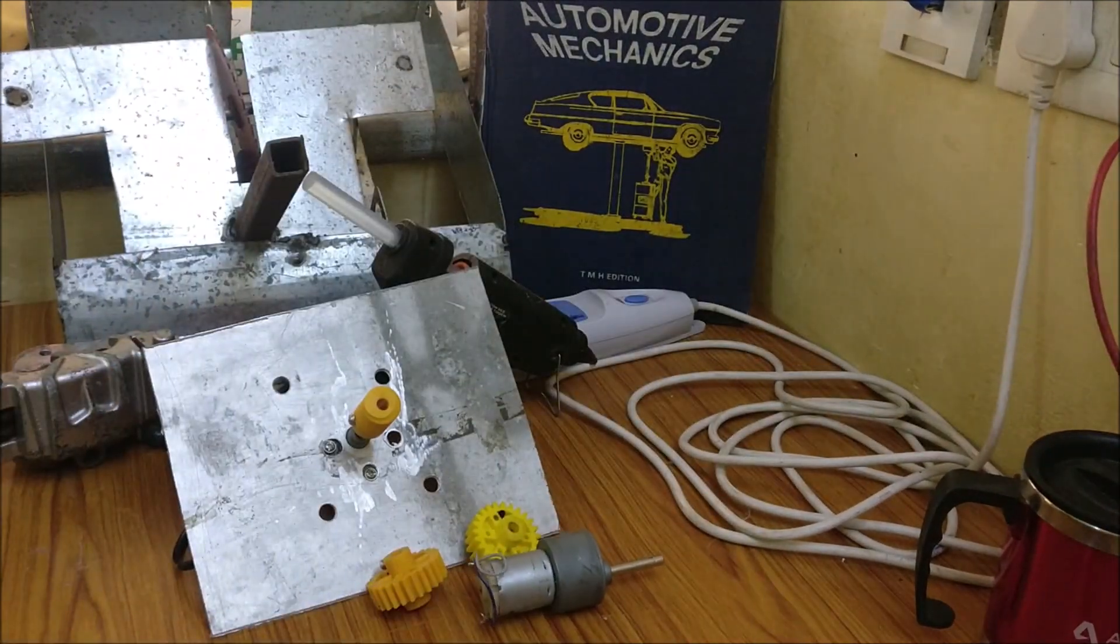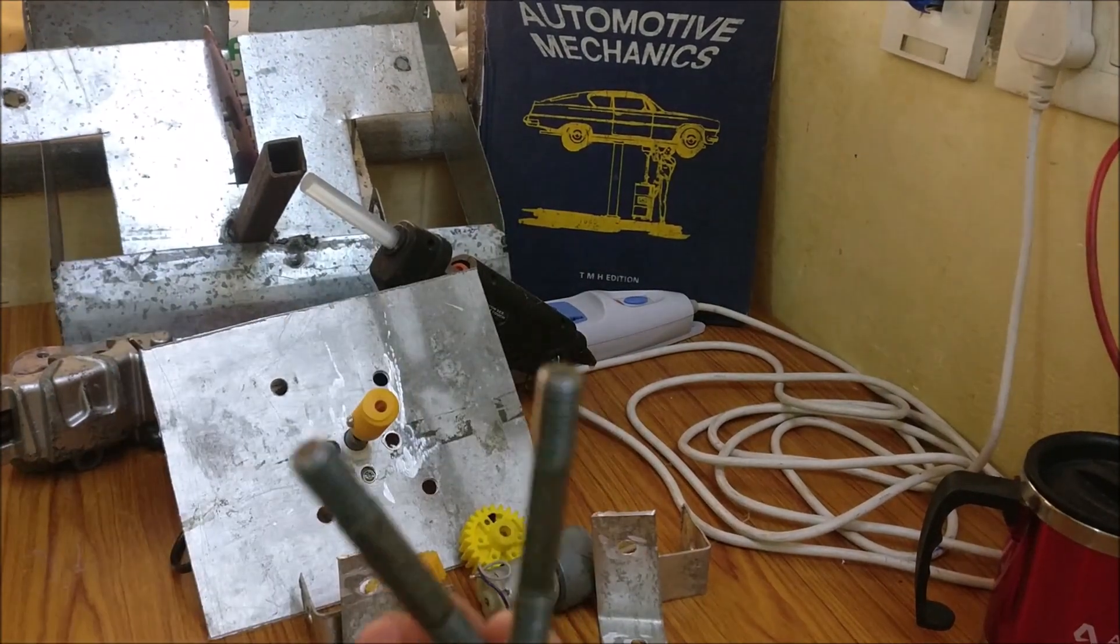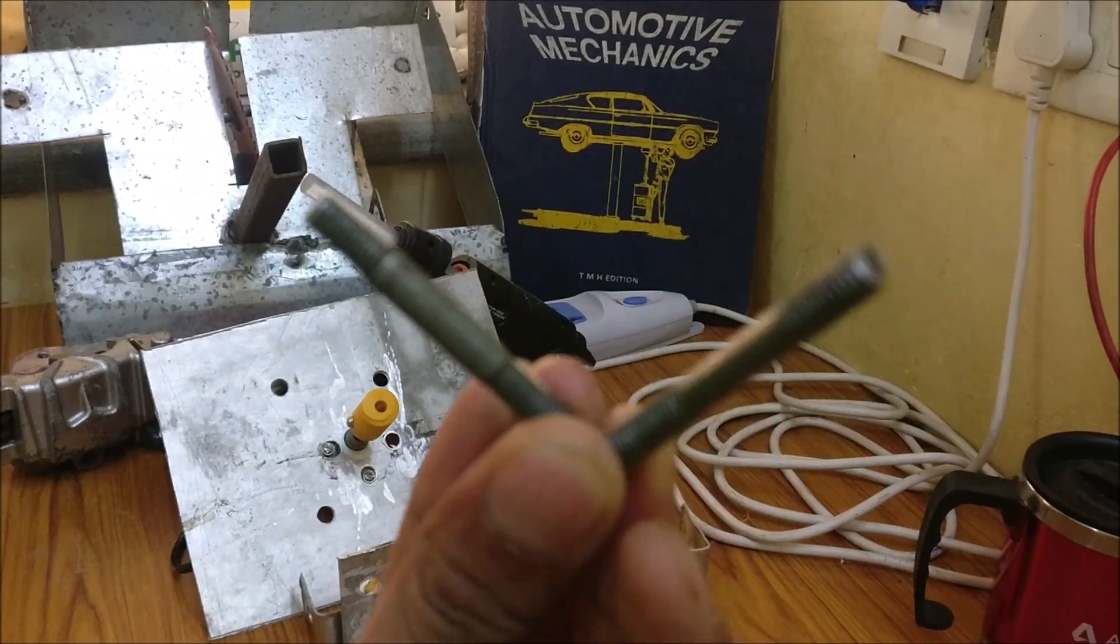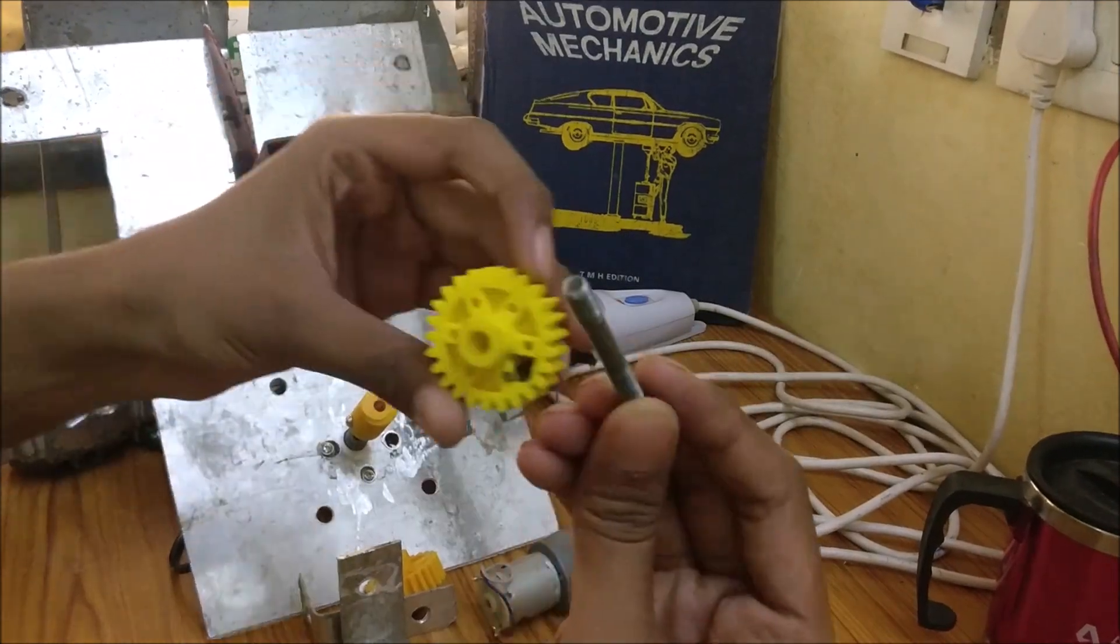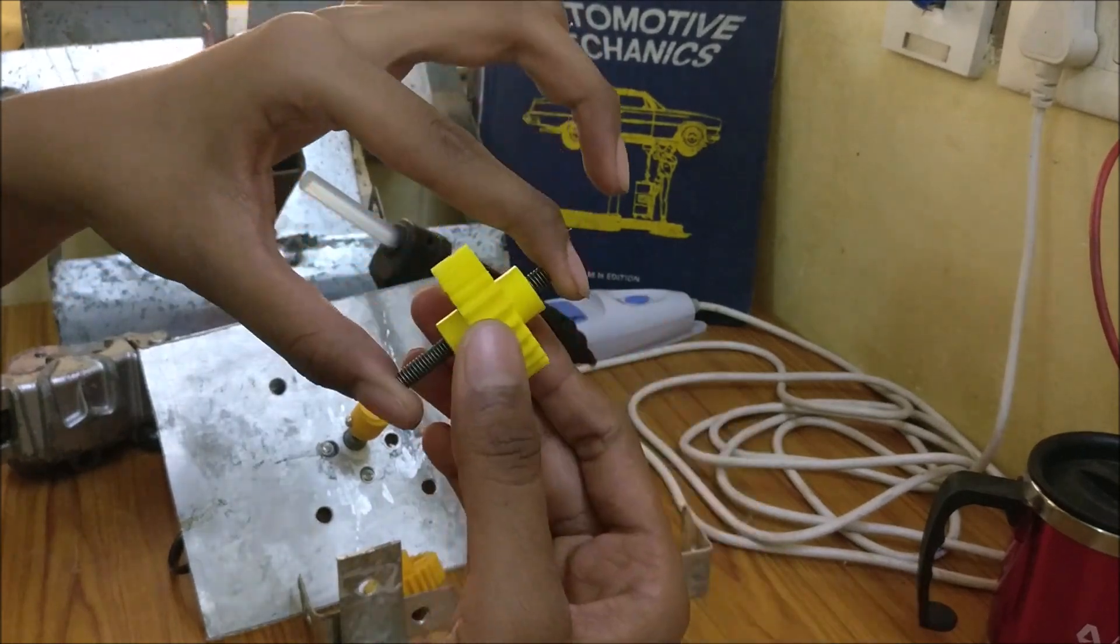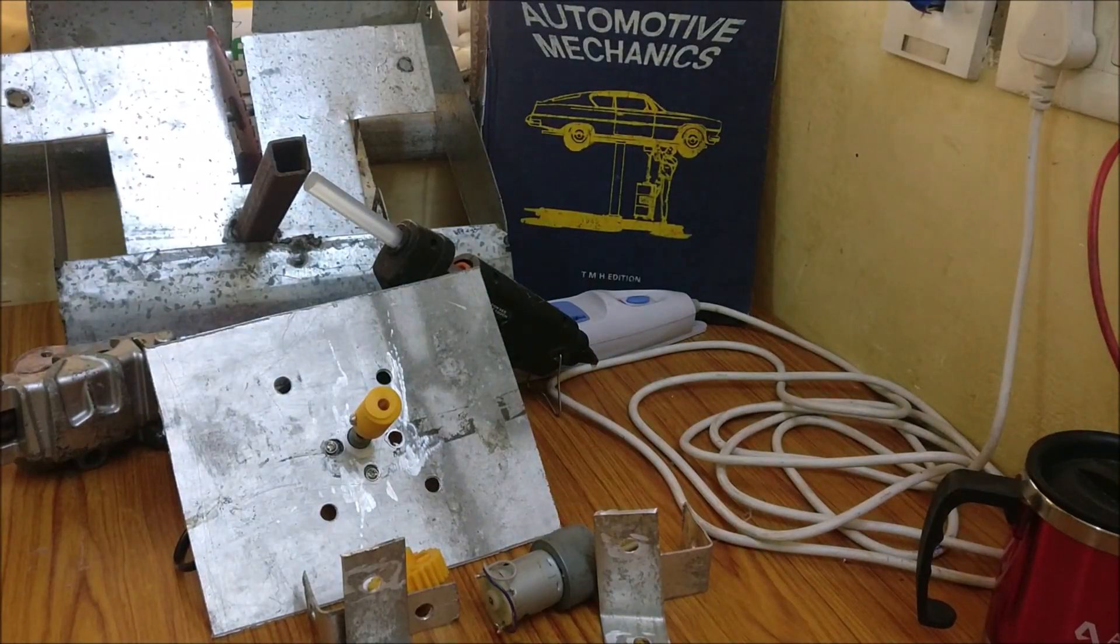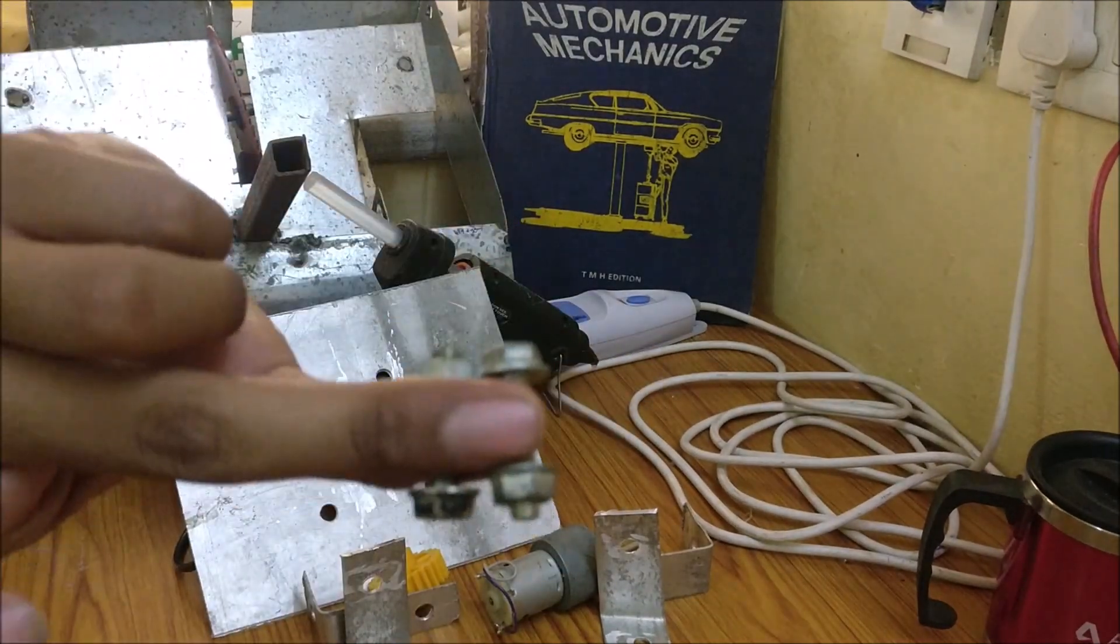So you require 4 clamps, 2 clamps for each spur gear. You require 2 long 2-sided bolts. These bolts will get inside your spur gear and act as a shaft for them. You require 4 bolted nut assembly for mounting the clamps.